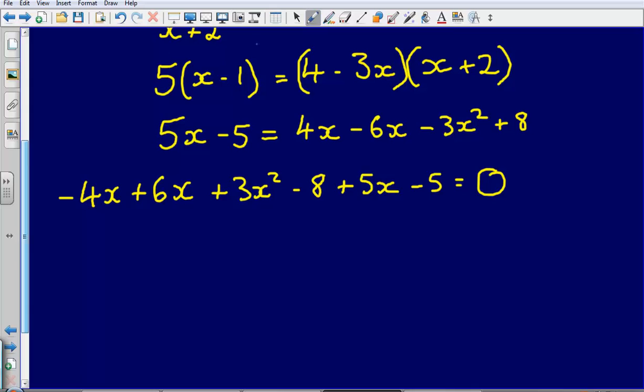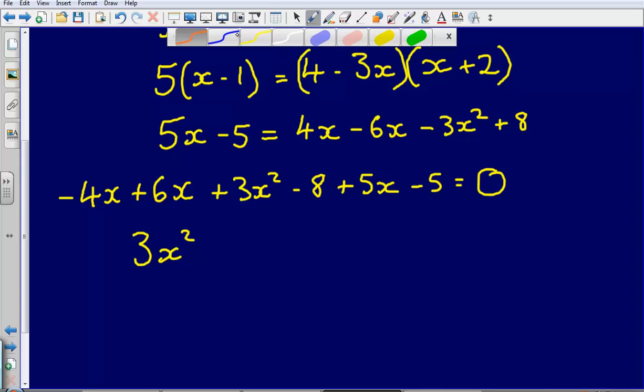Let's see, are there any other x squareds that I can collect together? No there aren't, so it is just 3x squared. Then let's take a look at my x terms. Let's cross out that plus 3x squared, we have dealt with that part.